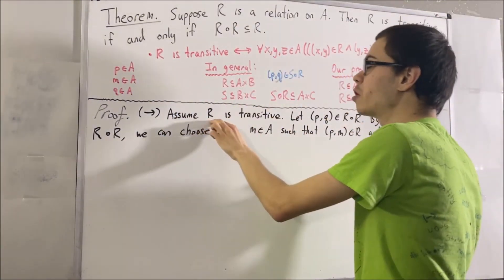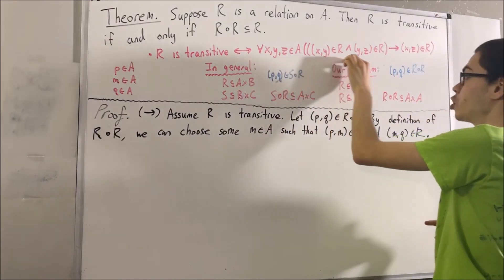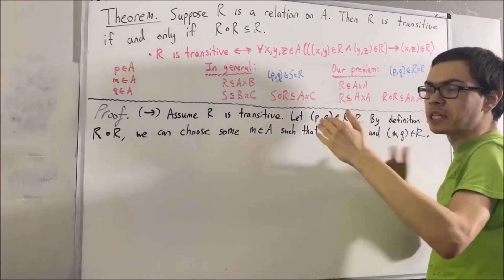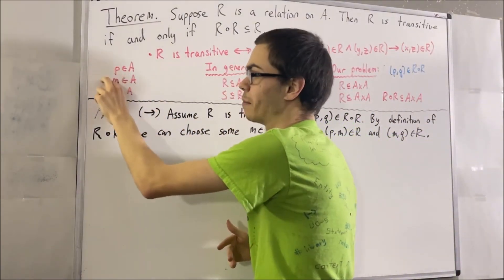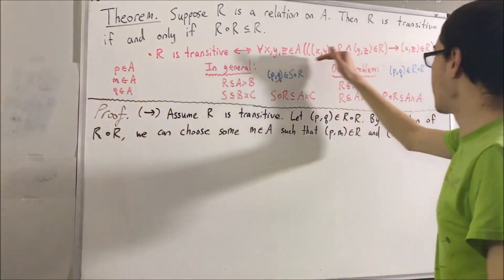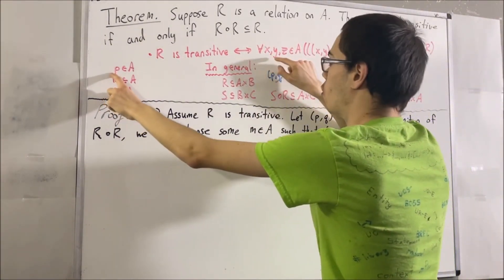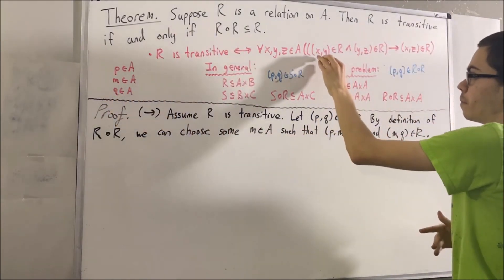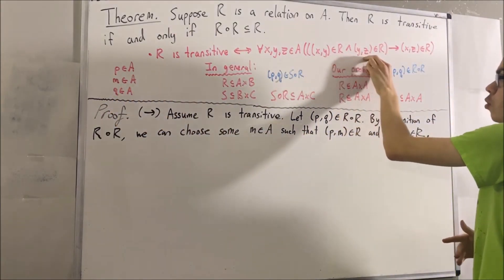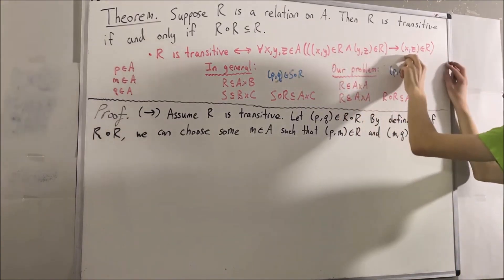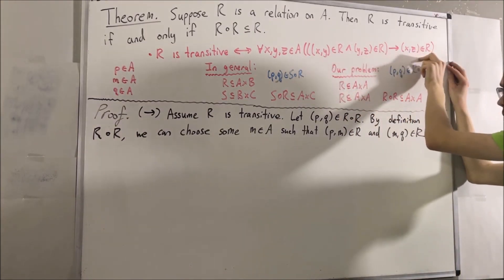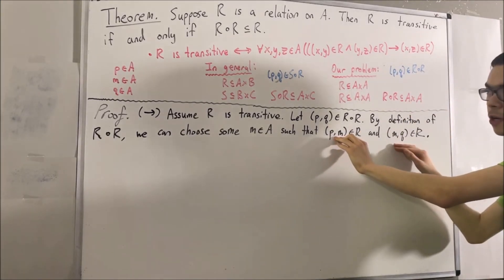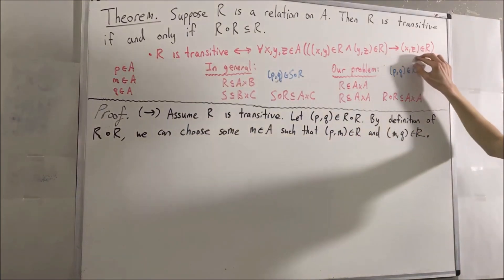Because R is transitive, we know the transitivity statement is true for every three elements in A. Therefore it must be true for these three elements P, M, and Q. So we can replace X with P, Y with M, and Z with Q. We have that if (P, M) and (M, Q) are both elements of R, then (P, Q) is also an element of R. But we do have that (P, M) and (M, Q) are both elements of R, so we can conclude that (P, Q) is an element of R.